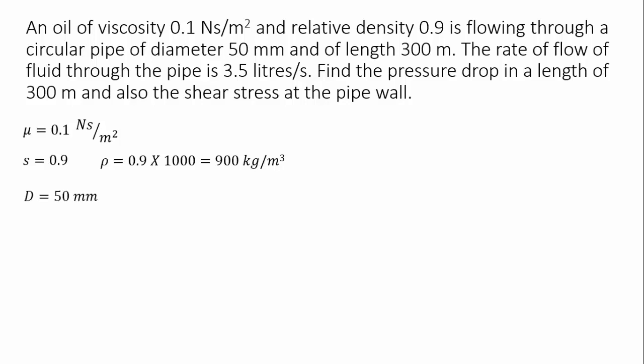The circular pipe has a diameter of 50 mm. We will substitute everything in meters, so it is converted to 0.05 meters by shifting three decimals. The length of the pipeline is 300 meters. The volume flow rate Q is 3.5 liters per second. Since 1000 liters equals 1 m³, we shift three decimals to get Q = 0.0035 m³/s.